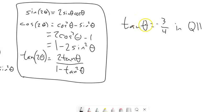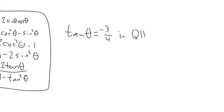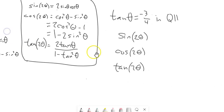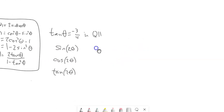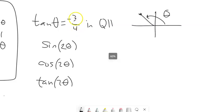Here's an example. We're told tangent of theta is negative three-fourths and it terminates in quadrant two. The question is: what would sine of twice that angle, cosine of twice that angle, or tangent of twice that angle equal? We start with a sketch. In quadrant two, tangent is y over x, so knowing it's negative there makes sense: the y-distance is 3 (positive, going up) and x-distance is 4 (negative, going left). Three divided by negative four is negative three-fourths.